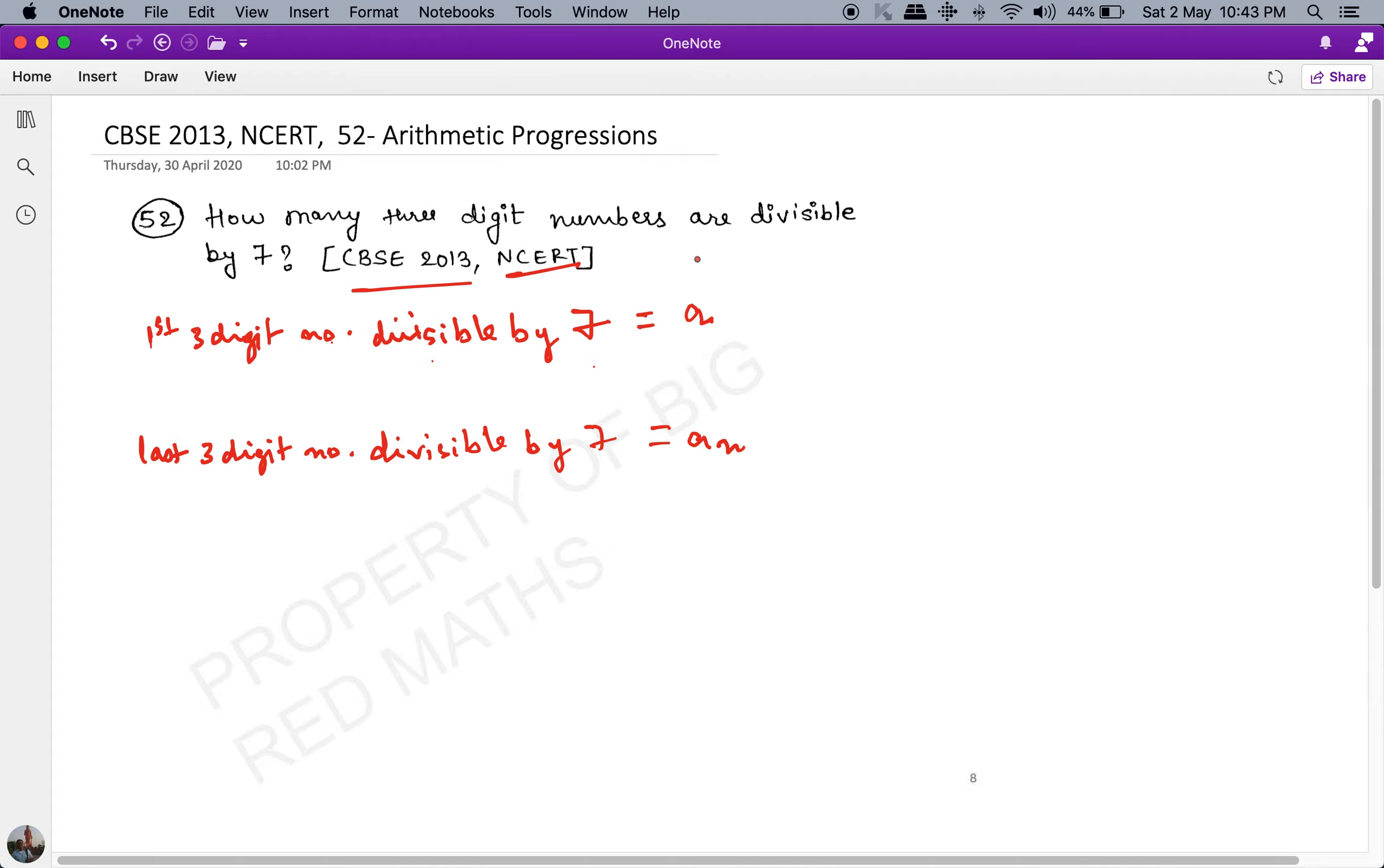We know that d = 7 because the difference between two consecutive multiples of seven is seven. I have to find the value of n. Let's see, first three-digit number divisible by seven...